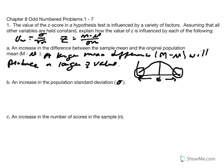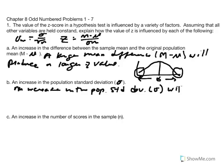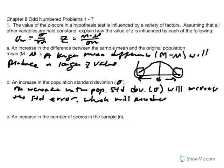Next, an increase in population standard deviation. Mathematically, now we're looking at the standard error of the mean equation. An increase in the population standard deviation will increase the standard error, which will produce a smaller z-score.